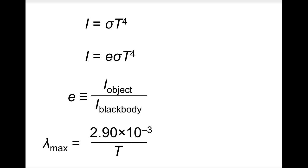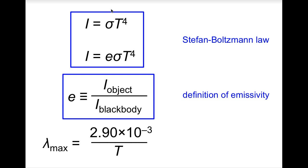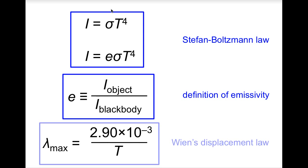These equations have names. The first two were generally referred to as the Stefan-Boltzmann Law. And this sigma constant here, it's a constant, that is called the Stefan-Boltzmann Constant. This here is the definition of emissivity. And this last equation is called Wien's Displacement Law.